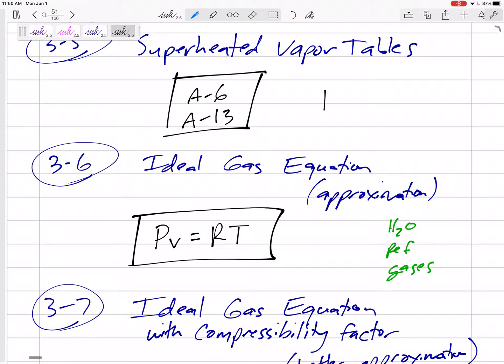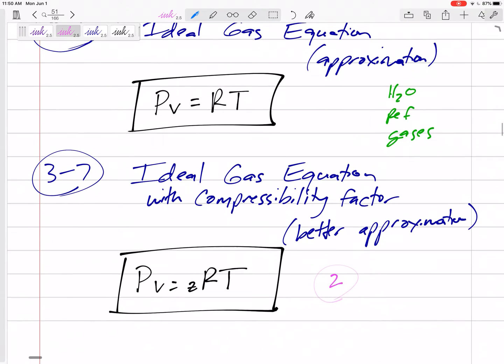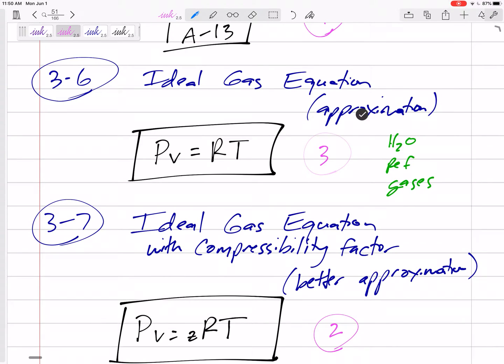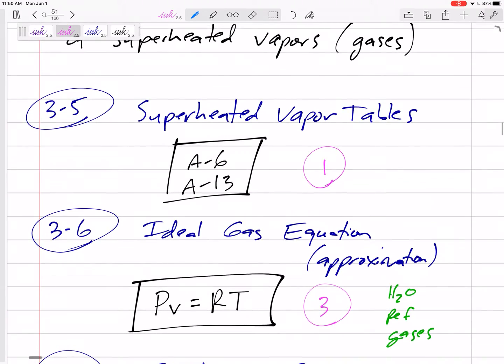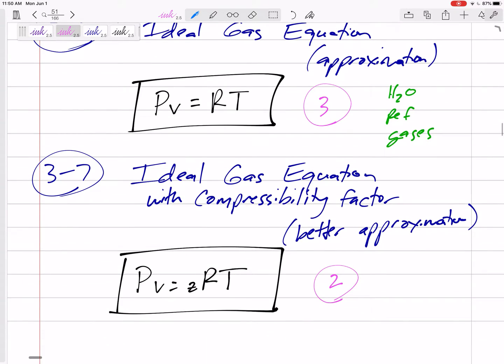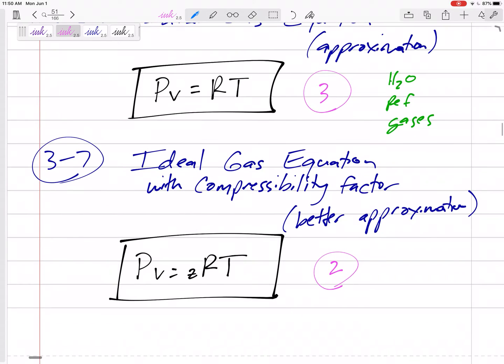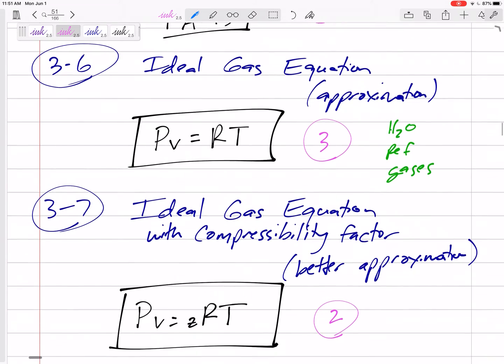So this one is best. The property tables are best. Those are the most accurate. Then second most accurate would be the ideal gas with compressibility. And the least accurate would be the ideal gas without any compressibility factor. So that's where we're going. We can get some of these properties in different ways. Now, some of them, maybe there are no tables. Like if we're talking about oxygen, if we're talking about some other things other than water, maybe there are no tables. And so we just need PV equals RT.